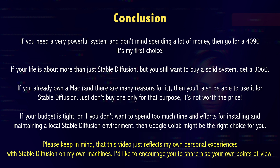So here comes my final conclusion. If you need great computing power and don't mind spending a lot of money, then just go for a 4090 — it would be my first choice by any means. If you're looking for a solid mid-range system at a good price, go for a 3060 or something similar. If you already own an Apple Silicon Mac, you can also use it for Stable Diffusion, but don't buy one just for that purpose — it's not worth the money. And if your budget is very low or you don't want to spend too much, you might want to give Google Colab a try. It's free in the basic version and it offers some great subscription models.